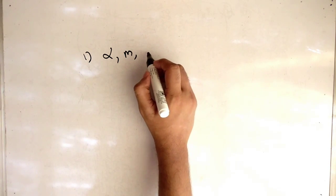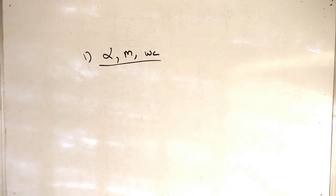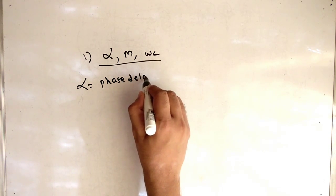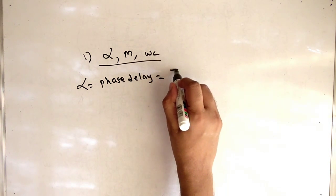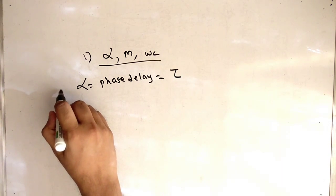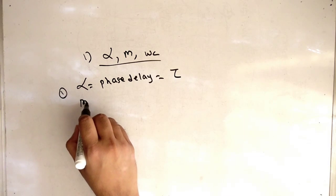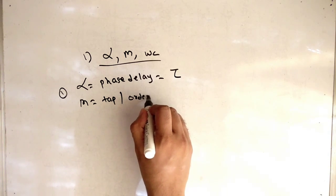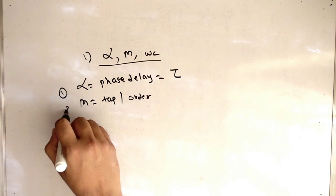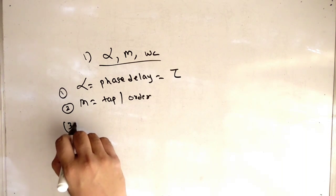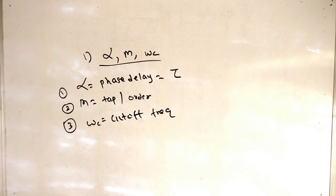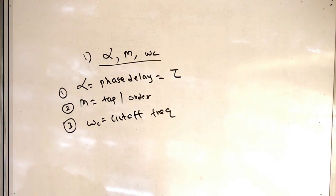Now the first parameter: alpha means phase delay, also represented as tau. M means the tap — sometimes called the order of the filter. Omega C is the cutoff frequency. So these are the definitions of the three parameters we need.